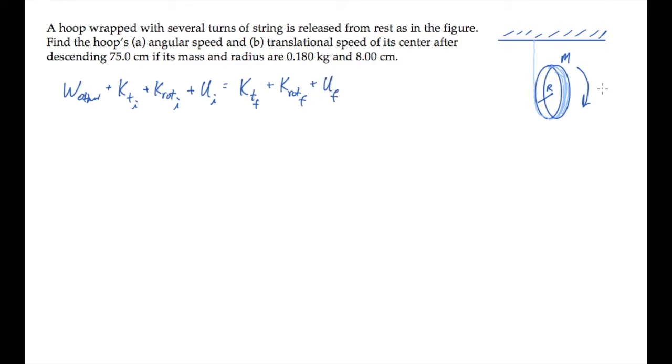If we identify this as the initial state, when nothing's moving, then the hoop descends through a distance h, picking up a final rotational speed, omega f, and a final translational speed of its center, vf.